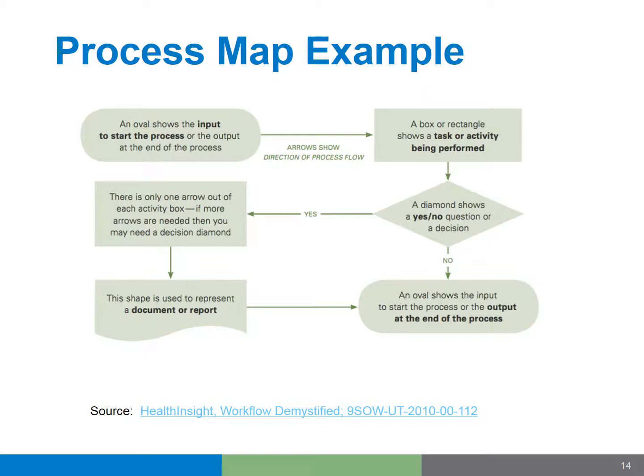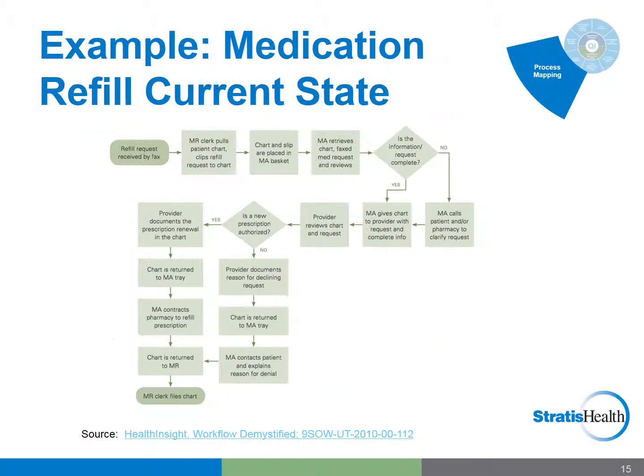Here's a very basic example which adds one more shape in the lower left representing a document or report in a process. You are not bound to use that shape; you can use a square rectangle and make a note that a document or report is being used or required for that step. Take a moment to pause the course to walk through the steps in this slide. Here's a sample medication refill process before a clinic started using an EHR to accomplish the process. You'll see that most steps identify who is carrying out the task, which is important as we need to know who is carrying out the work when we modify or redesign the process. You might also think about the time factor — how long does it take to perform each task, and is there a delay between steps? Pause the course if you'd like to review this example.